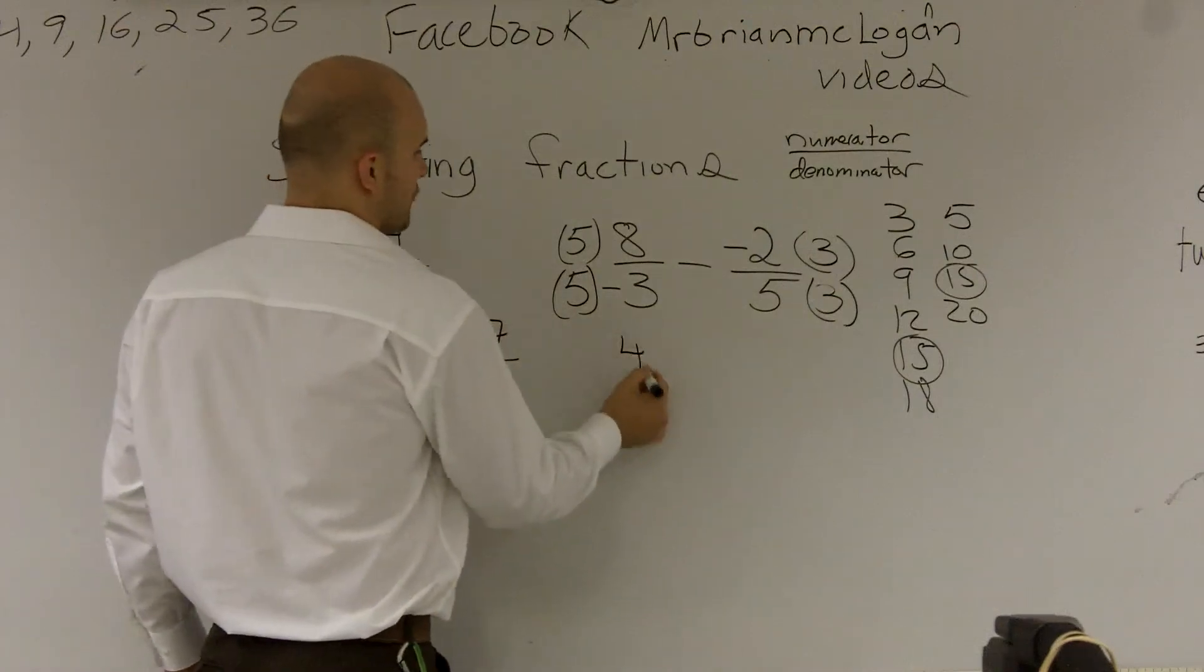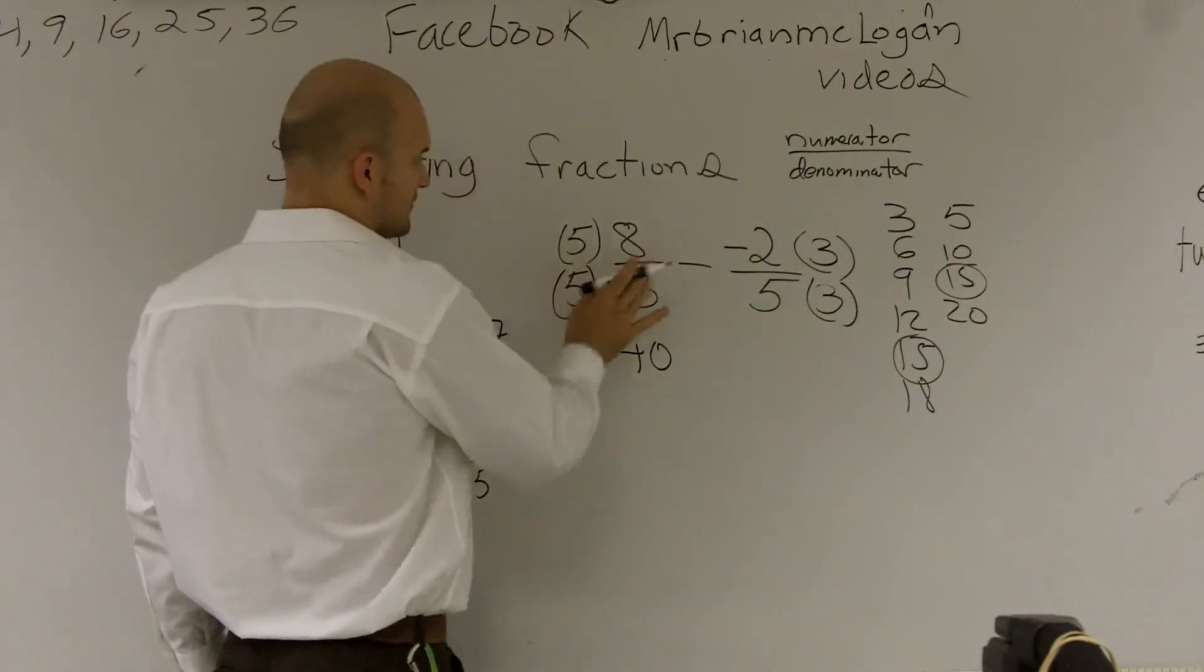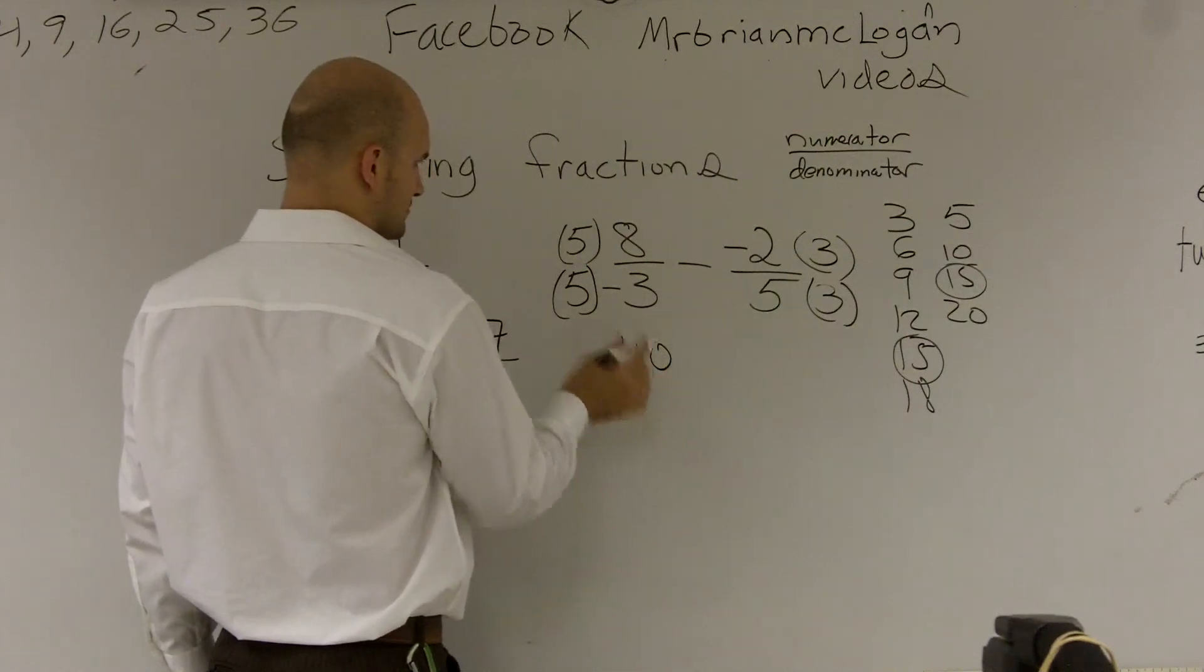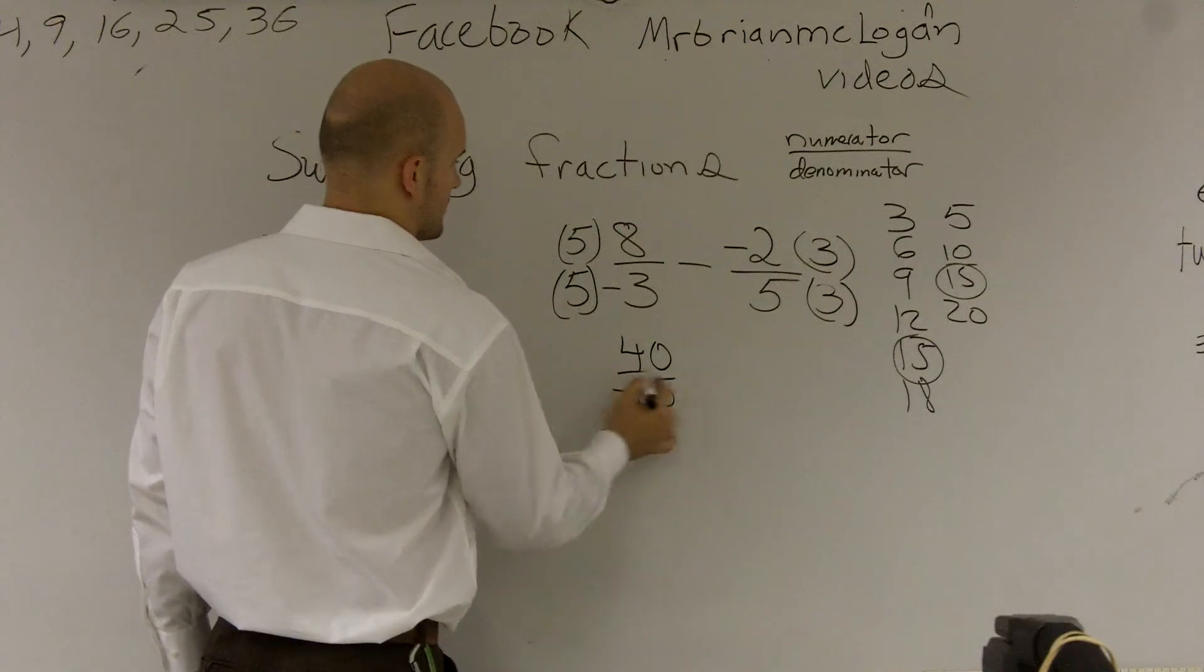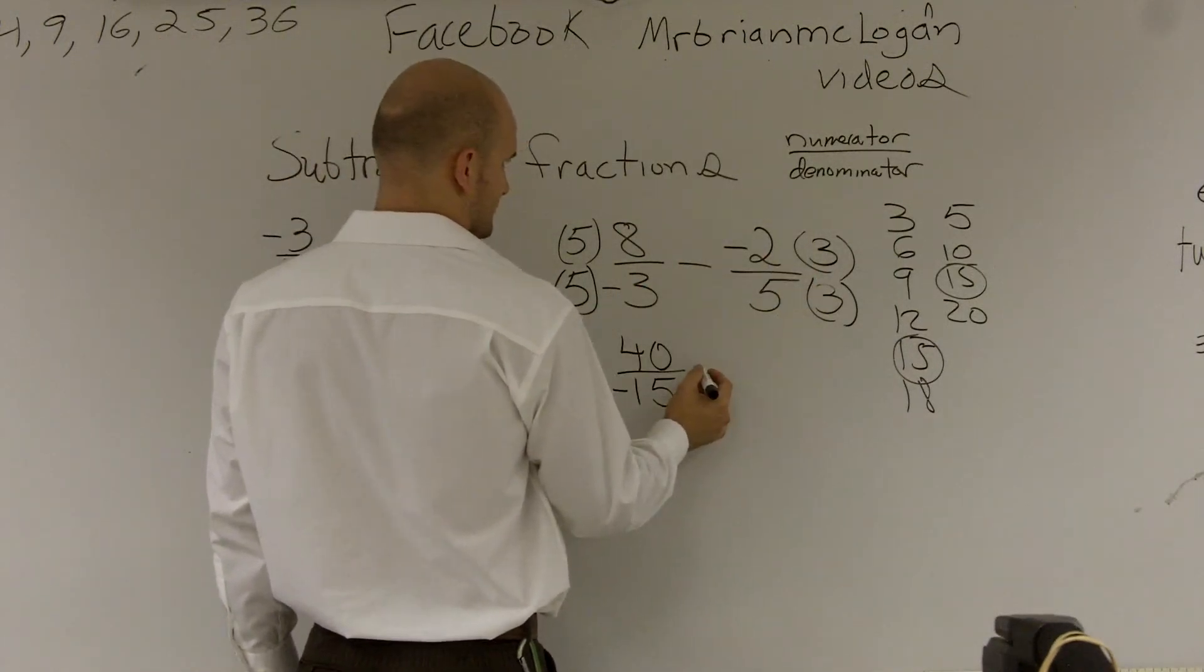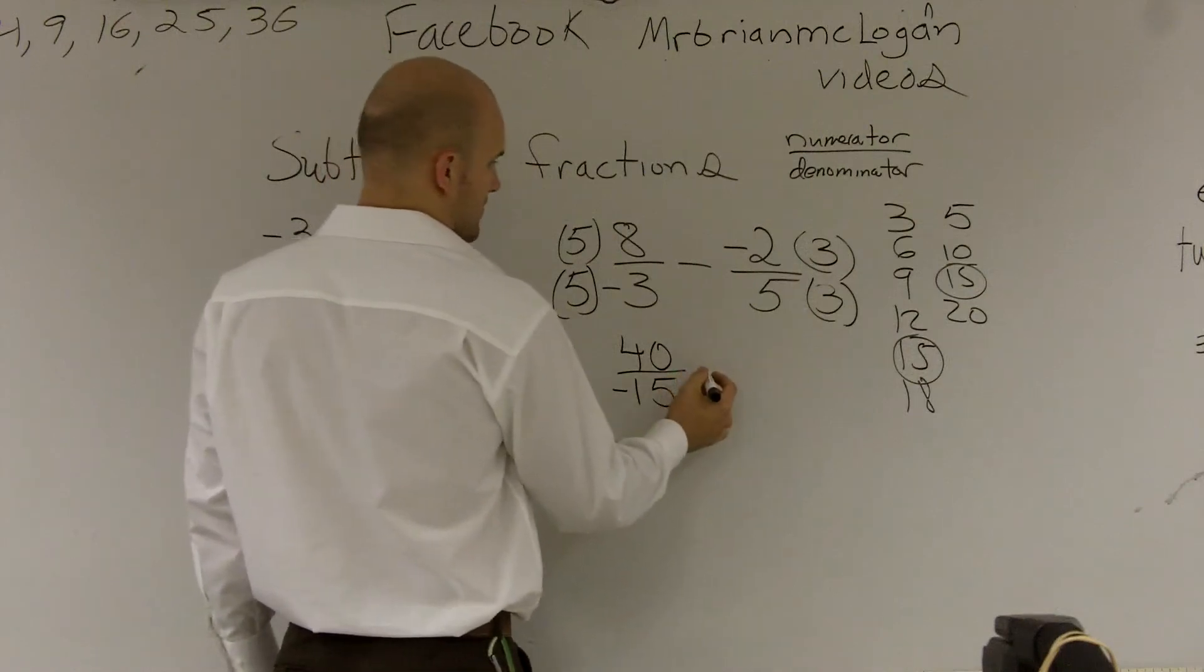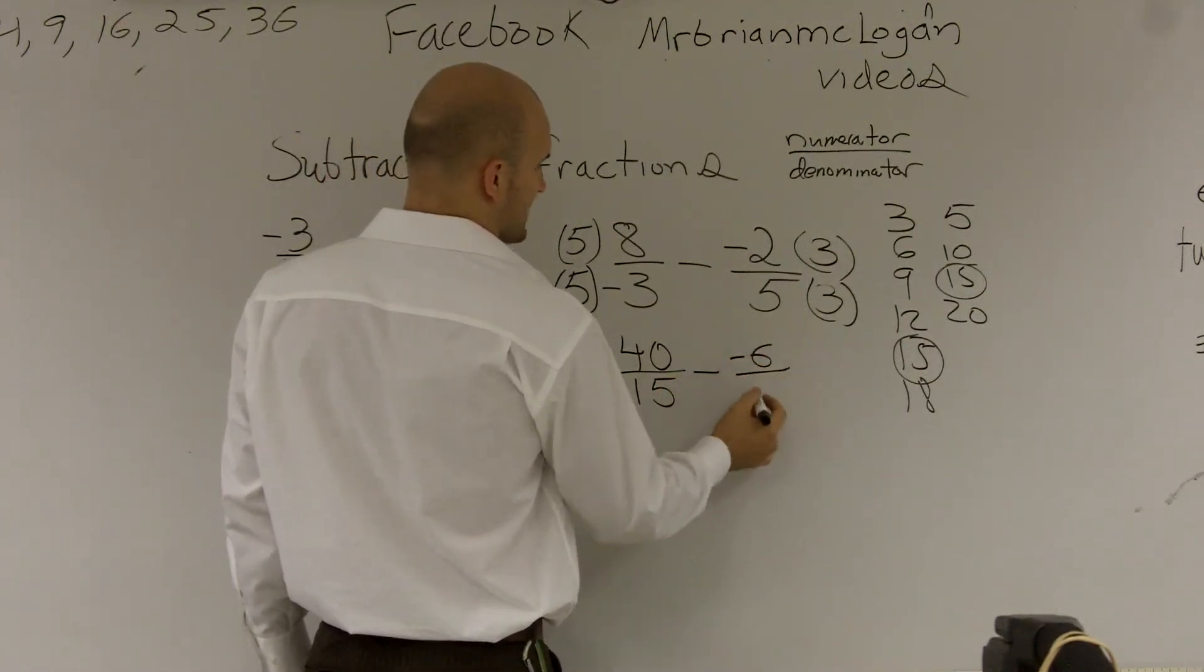Five times eight is forty. Five times negative three is going to be negative fifteen. And then I have three times two is negative six. Minus a negative six over five times three is fifteen.